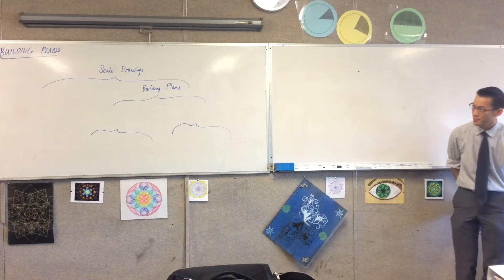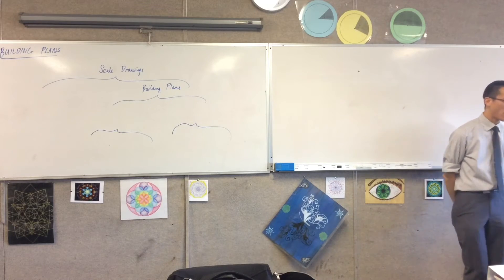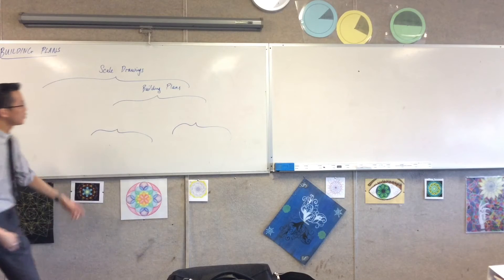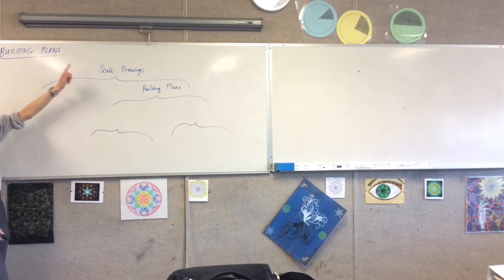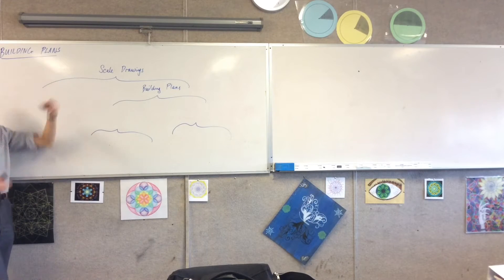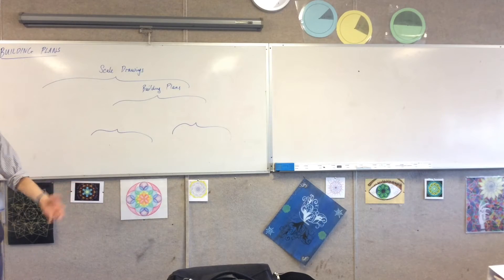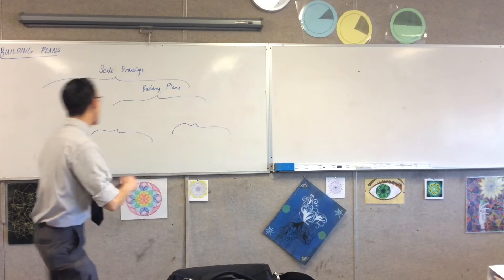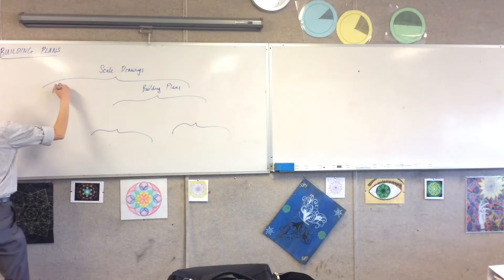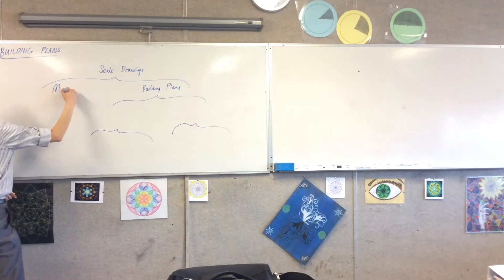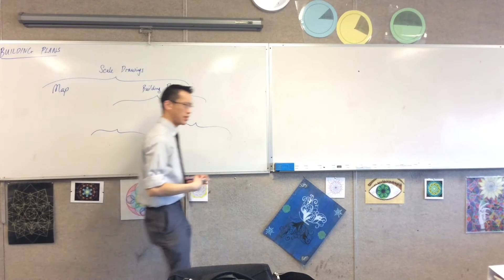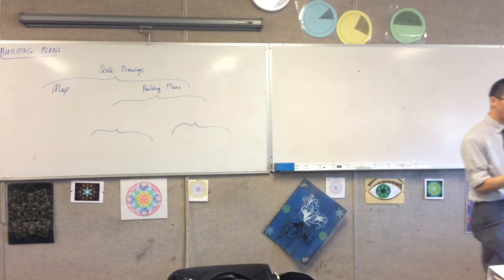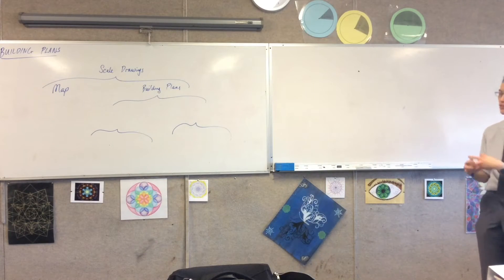We've been on the topic of similarity. One of the instances in real life that we touched on was when you want to draw stuff that represents much, much bigger things. The most common example, which we already looked at, is maps. You look at a map — we're used to reading maps — and obviously they're a much, much smaller representation of what you've got.